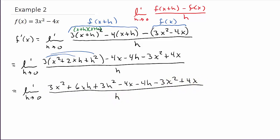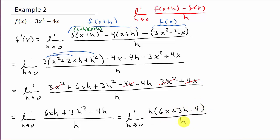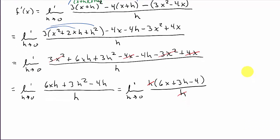The 3x squared terms cancel and the 4x terms cancel, leaving the limit as h goes to 0 of 6xh plus 3h squared minus 4h, all over h. We've got a common factor of h that we can factor out, giving us the limit as h goes to 0 of h times (6x plus 3h minus 4), over h. The h's cancel out.